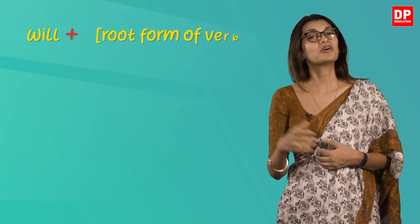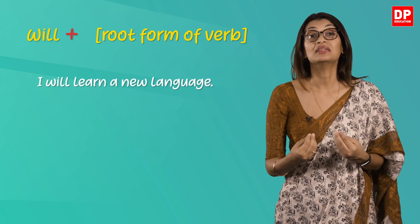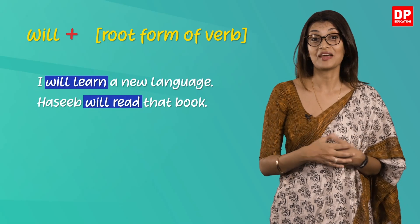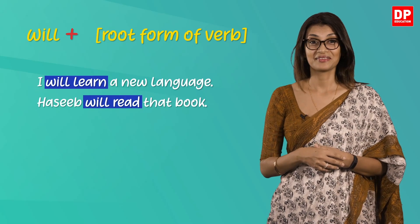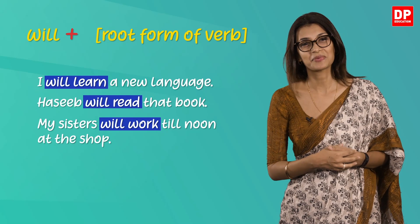So how do we form the simple future? The formula is simple — one that you would have noticed before in the examples given. It's 'will' plus the root form of the verb. For example: 'I will learn a new language.' 'Hassib will read that book.' 'My sisters will work till noon at the shop.'